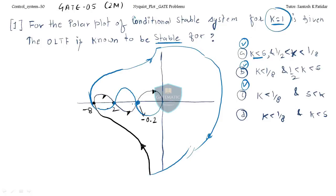The key values on the plot are: this value is 0.2, this value is 2, and this value is 8. If we consider k in the expression, we can write it such that if you put k equal to 1 you will get whatever is plotted initially. All the points can be multiplied with k, and putting k equal to 1 gives the original plot.